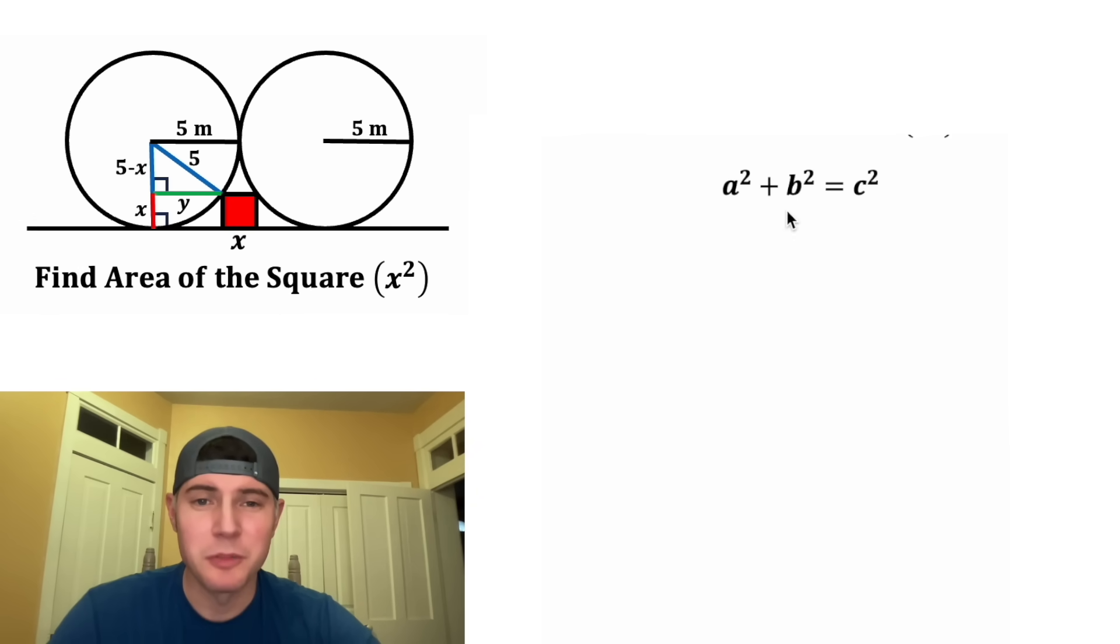So we can use A squared plus B squared equals C squared. We can do five minus X squared plus Y squared equals five squared. Five minus X squared is five minus X times five minus X, which gives us 25 minus 10X plus X squared. And then we still have the plus Y squared, and it'll be equal to five squared, which is 25.